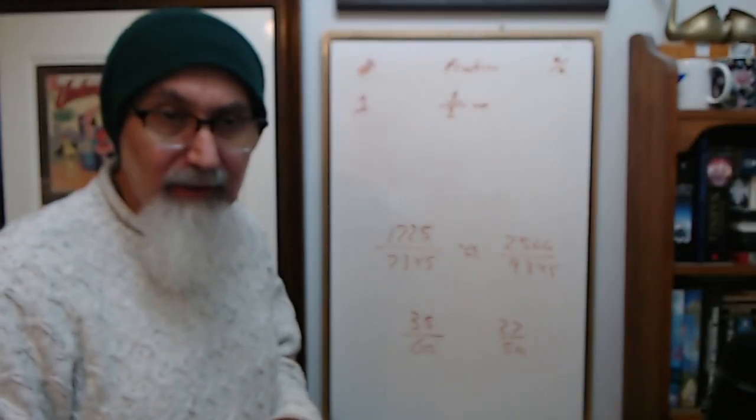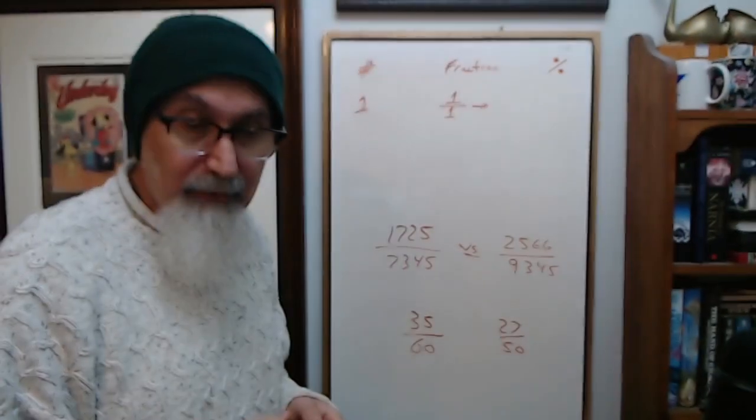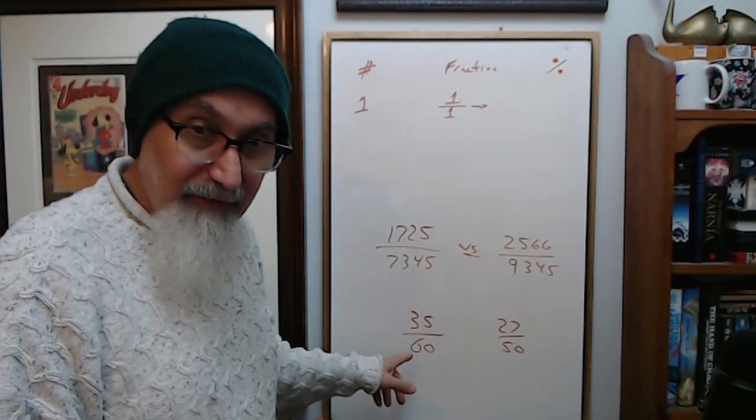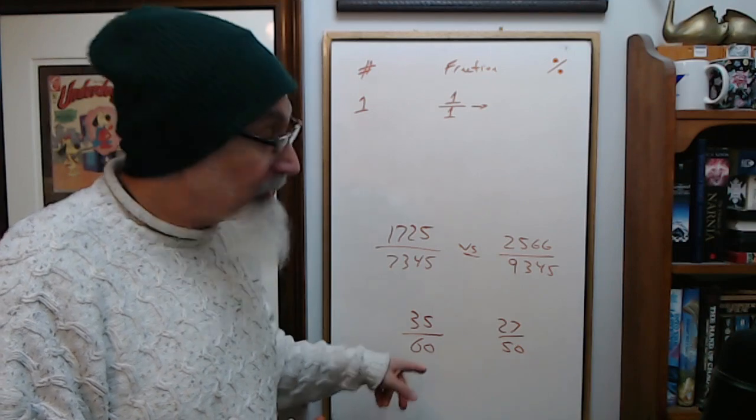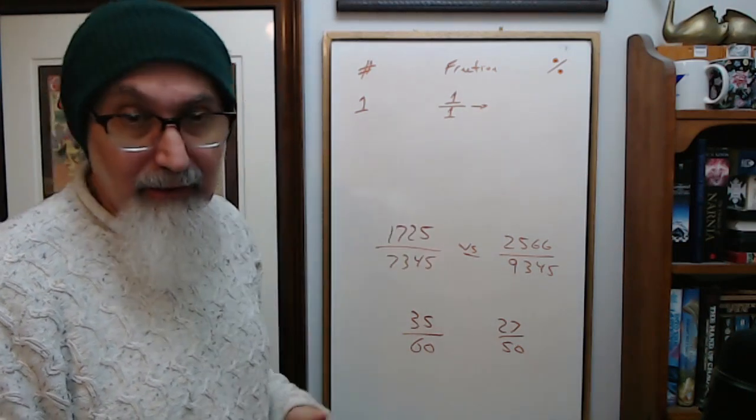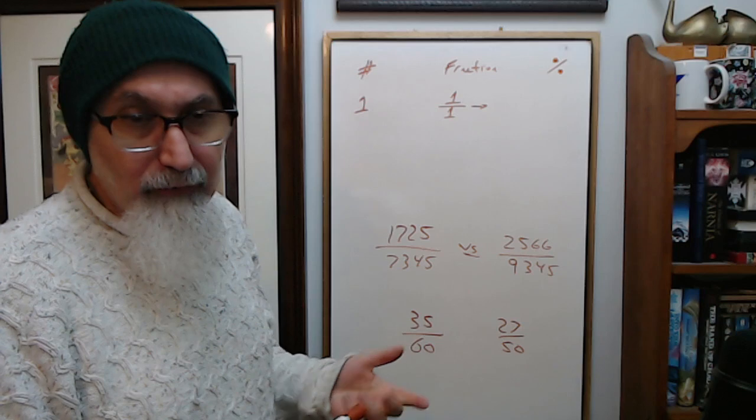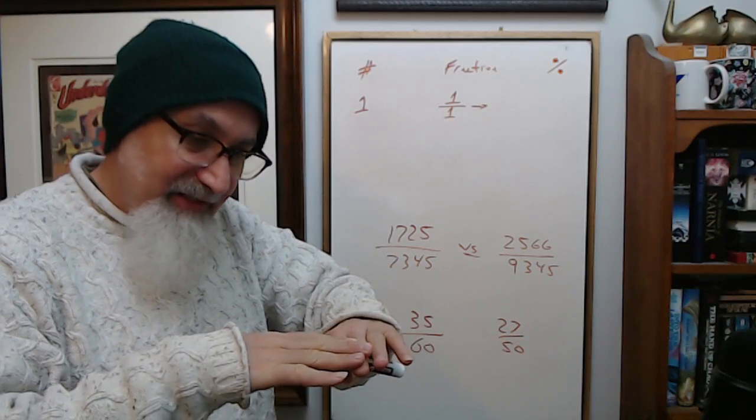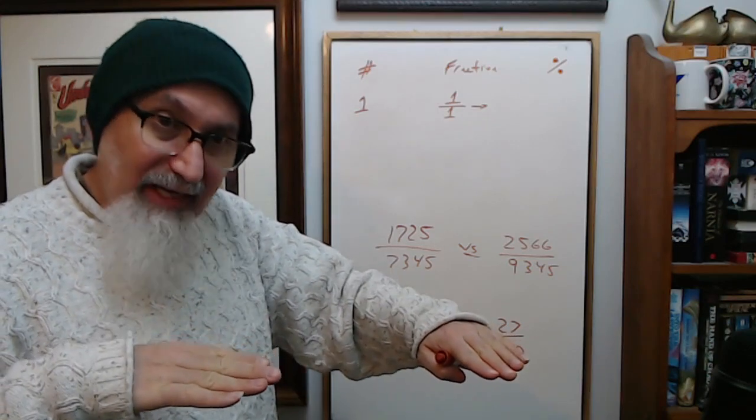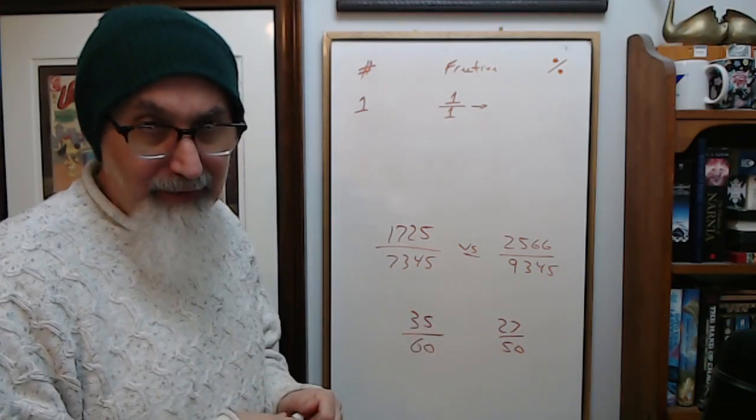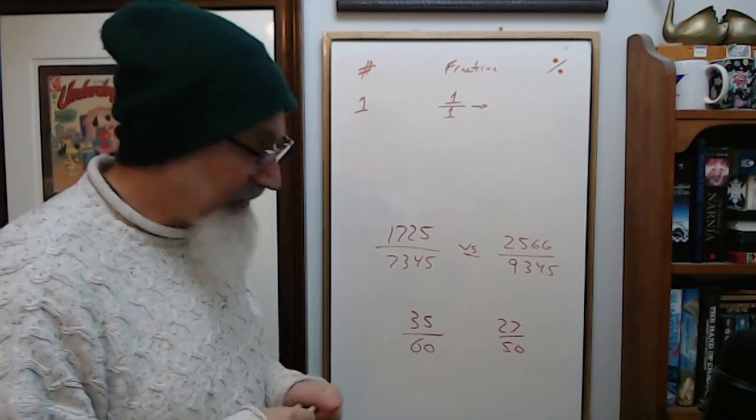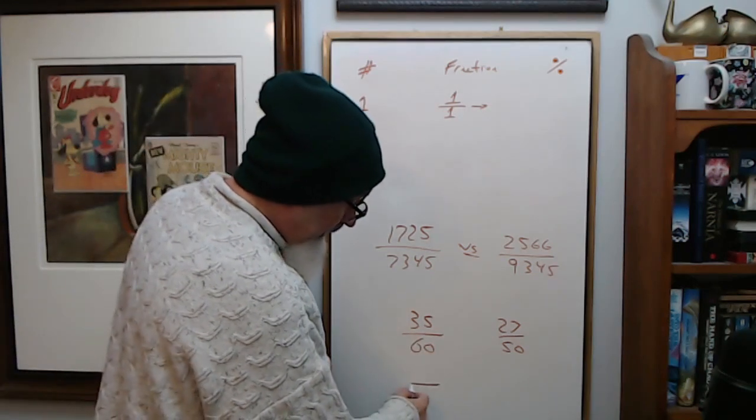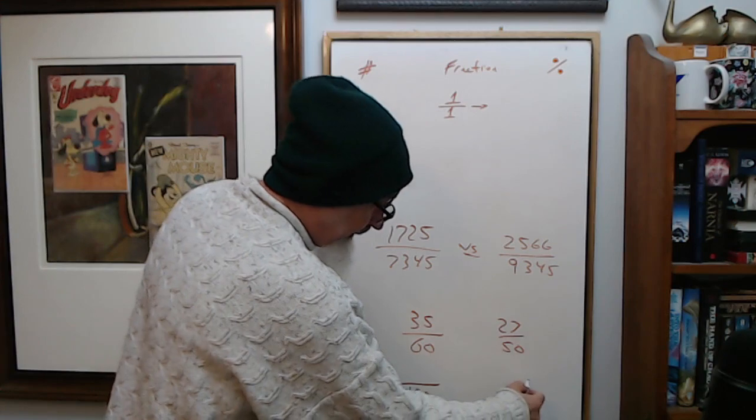Then you want to find out which one of you did better, who got a higher percentage. It's very difficult to do with this, so you convert it to a decimal and then kick it up to a percent. It standardizes things, it puts things over the same denominator.